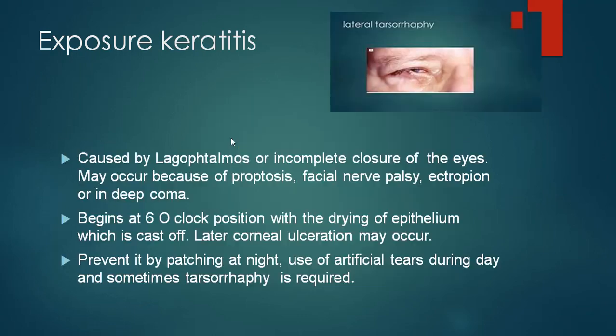Exposure keratitis usually appears at the 6 o'clock position and is caused by lagophthalmos or incomplete closure of the eyes. This may occur when the eyes are proptosed, with facial nerve palsy, entropion, or when the patient is in deep coma and unable to close the eyes. It begins at the 6 o'clock position with drying of the epithelium, which may be cast off leading to ulceration — and this can even lead to perforation. You can imagine a comatose patient developing corneal ulcer on both sides, perforating and going blind — so this can be catastrophic. Prevention involves patching at night, use of artificial tears during the day, and sometimes tarsorrhaphy is required.